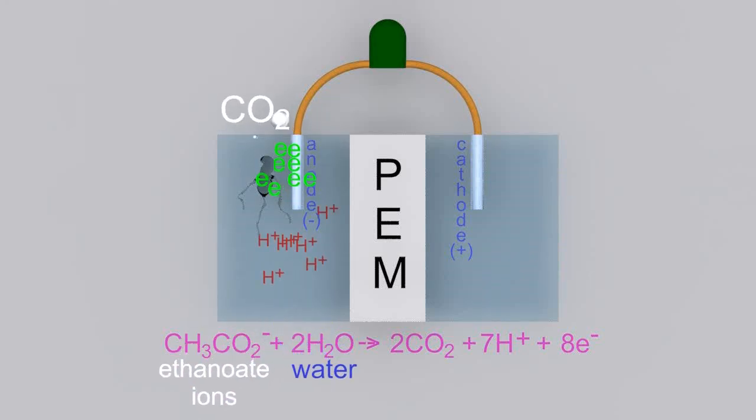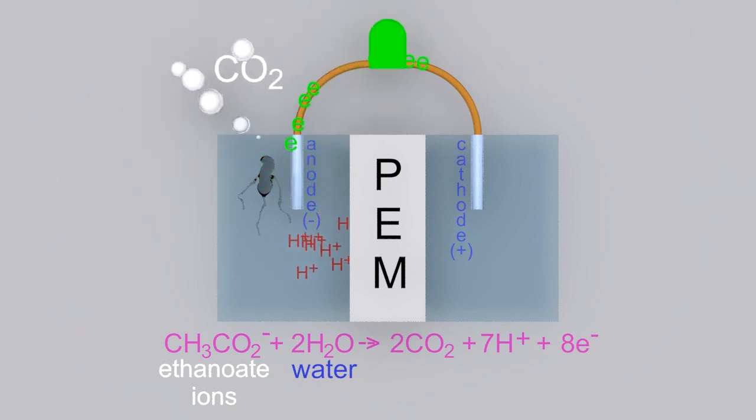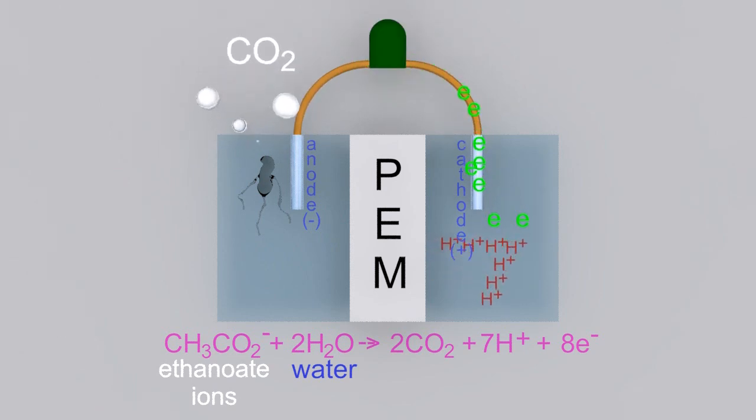The protons, the H+ ions, will move through the proton exchange membrane to the cathode and the electrons round the circuit to do some work.